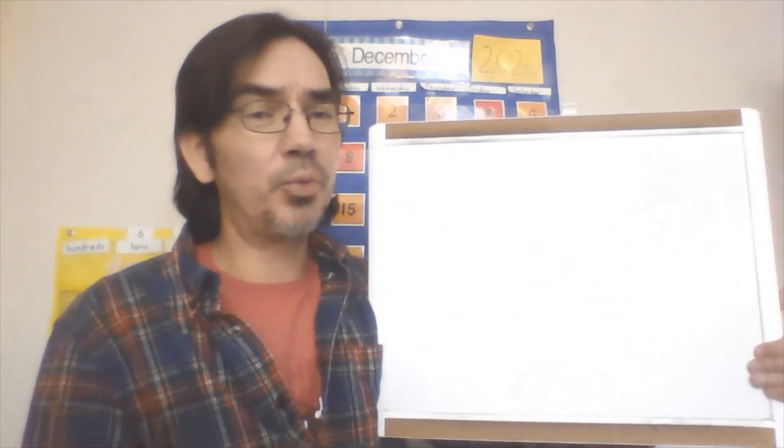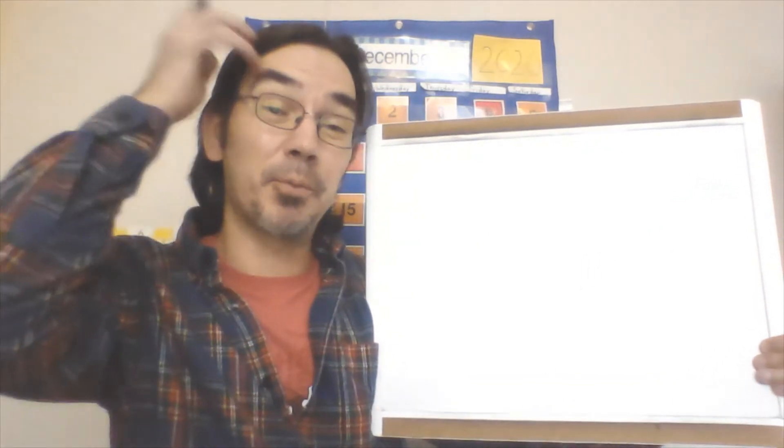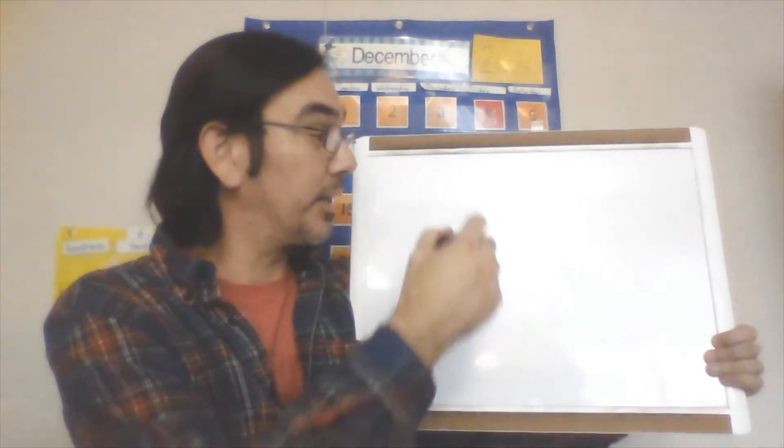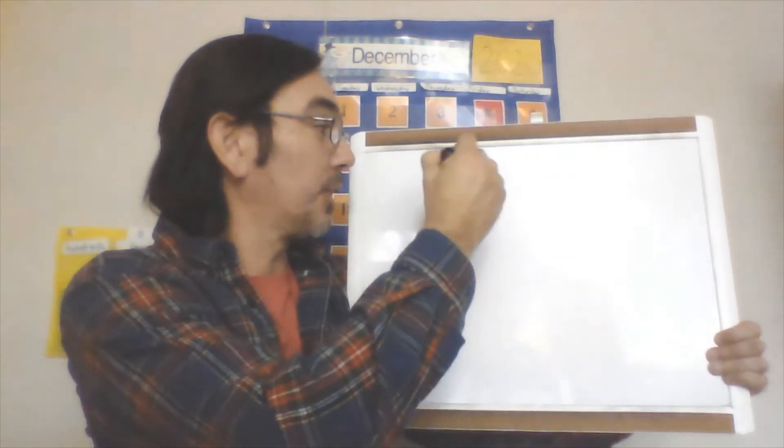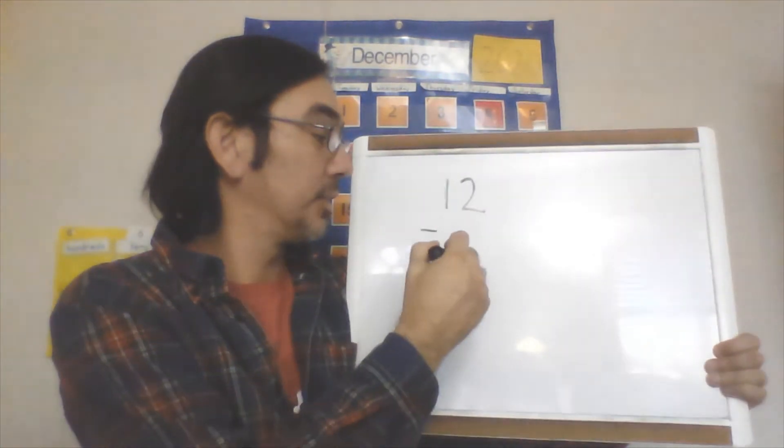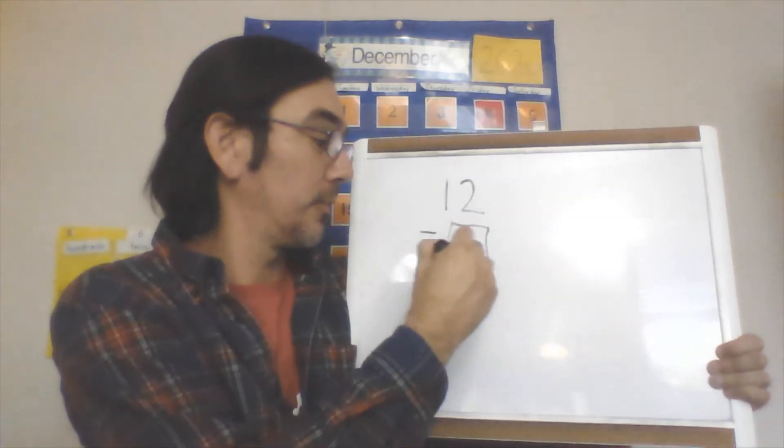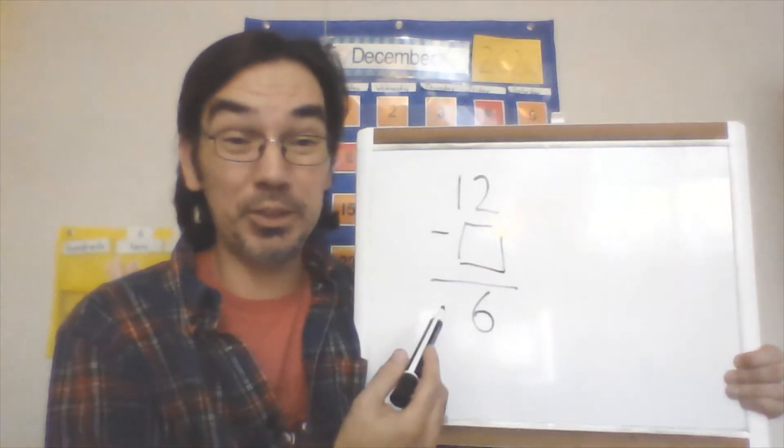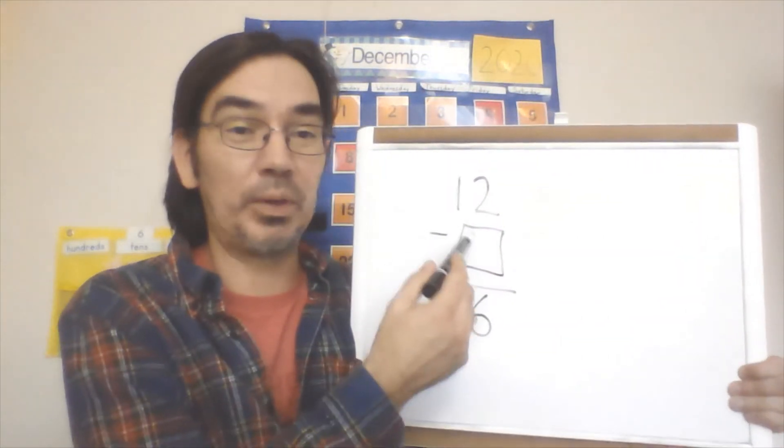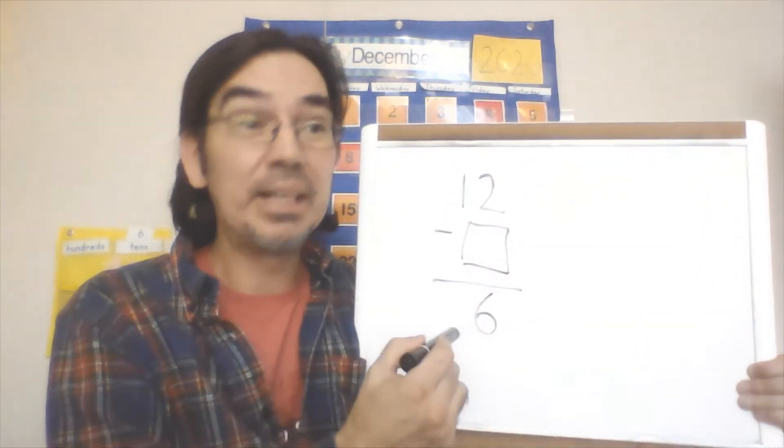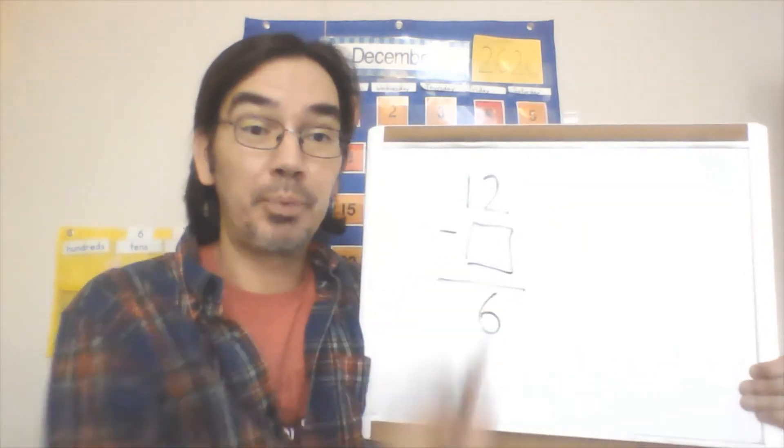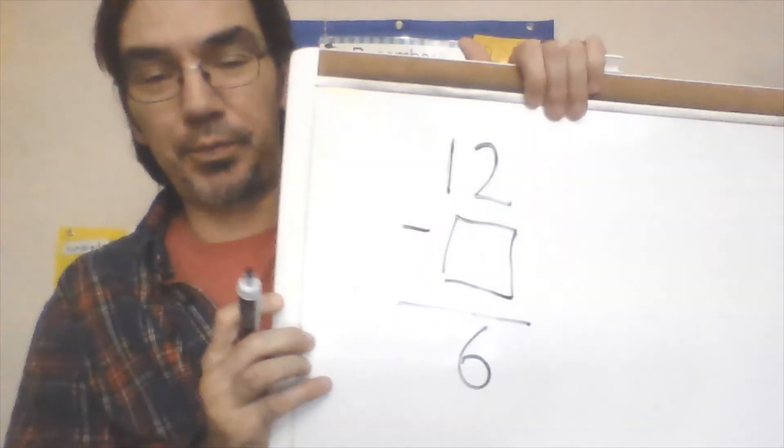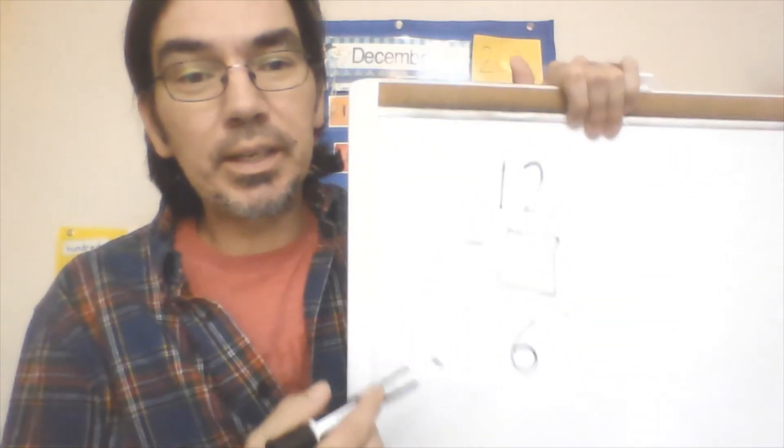One is a missing number. So if I had a problem that looks like 12 minus and there's nothing here equals 6, when we first see this we say, 'What? I don't know.' It gives me one of the numbers, gives me the answer, but it's missing the other number. What do I do?